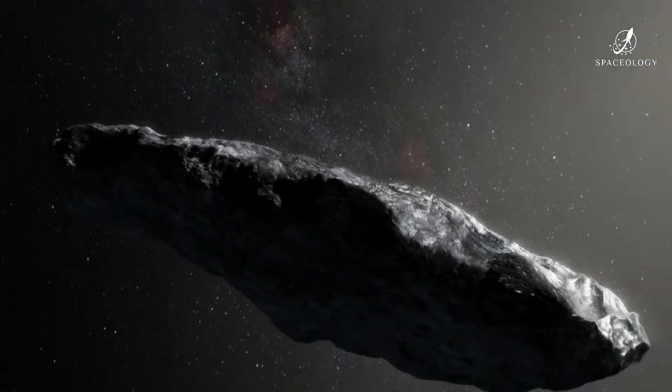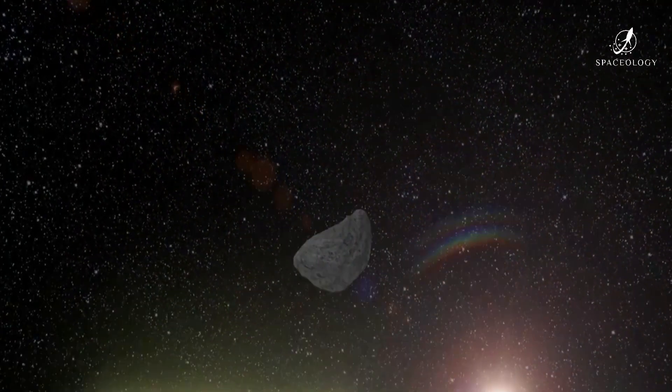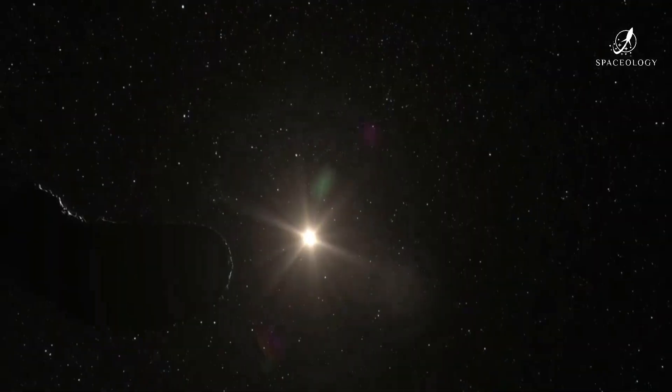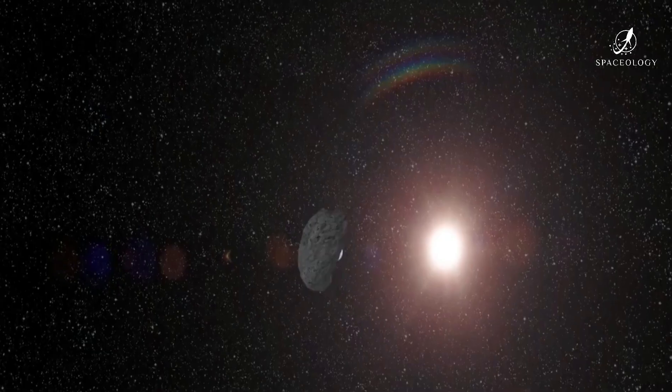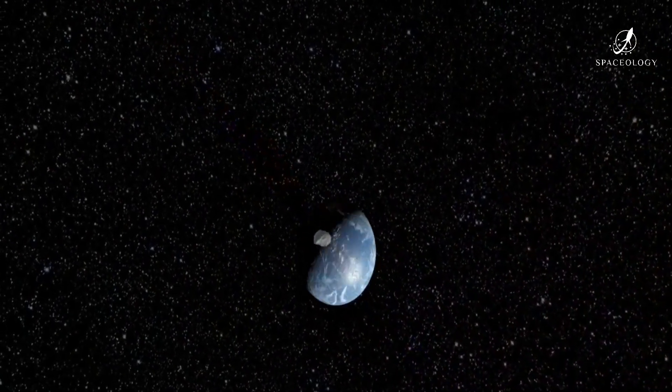Already, a recent discovery revealed that an asteroid the size of three-story buildings passed by earth quite recently, and not even NASA took notice of this event. That said, it's believed that more are on their way towards earth, but they are believed to rather just slide by earth with no actual contact.